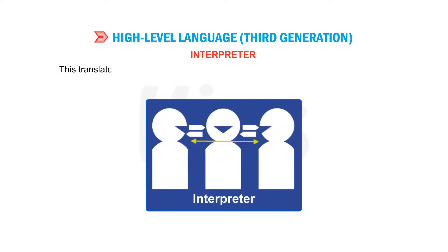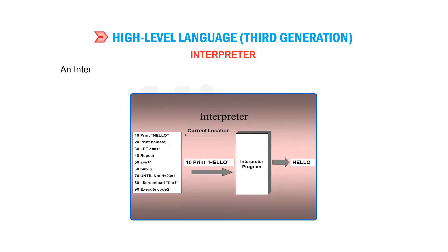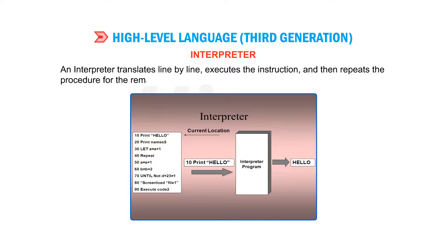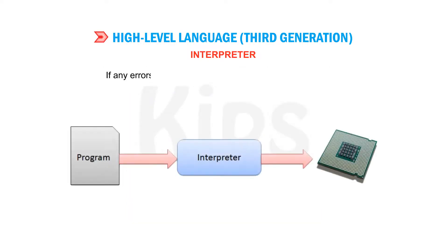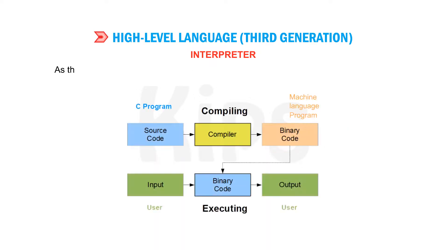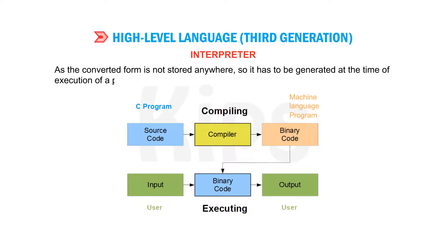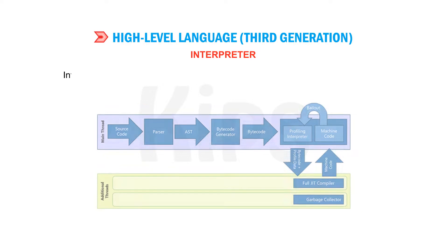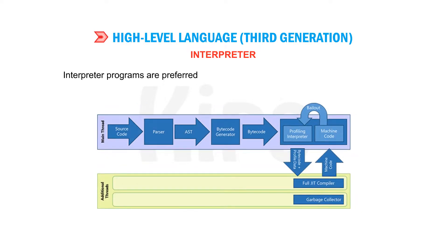The first is the interpreter. This translator program is used to convert a high-level language program into machine language. An interpreter translates line by line, executes the instruction, and then repeats the procedure for the remaining instructions. If any errors are found, they are to be removed immediately. Since the converted form is not stored anywhere, it has to be generated at the time of execution of a program. Interpreter programs are preferred for beginners and are slow in execution speed.